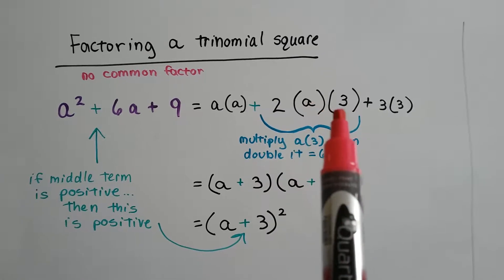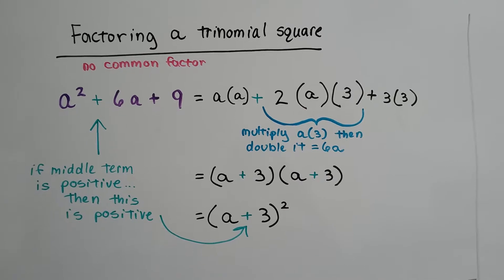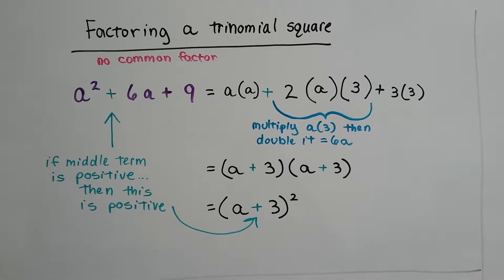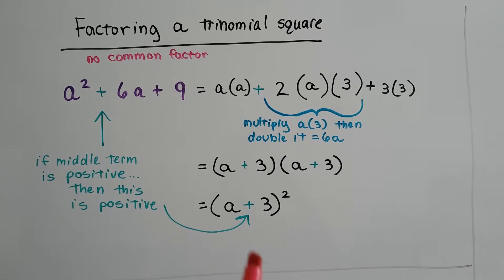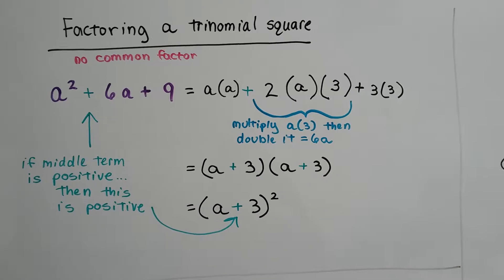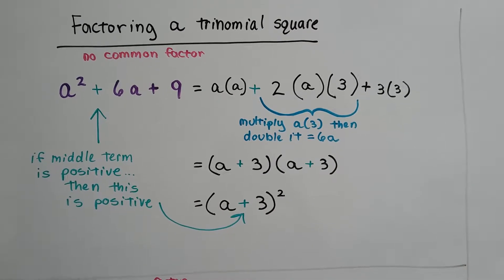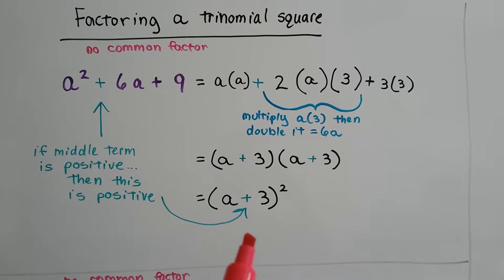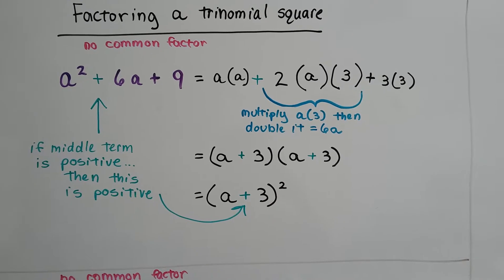So we know we've got to do an a times a 3 and double it. So that's going to be the middle term right there. That's going to give us an a + 3 and an a + 3. So our binomial square is (a + 3)².